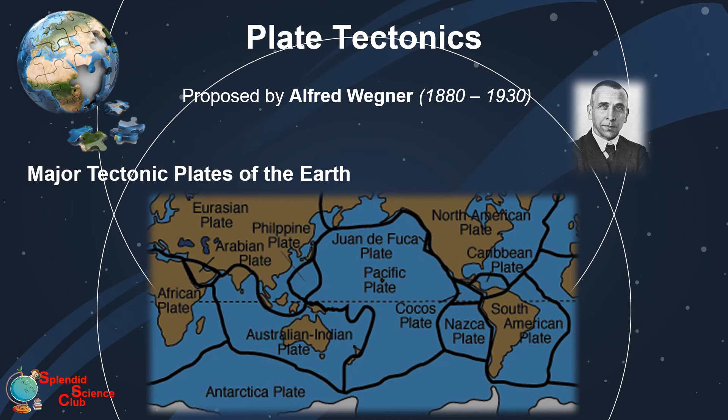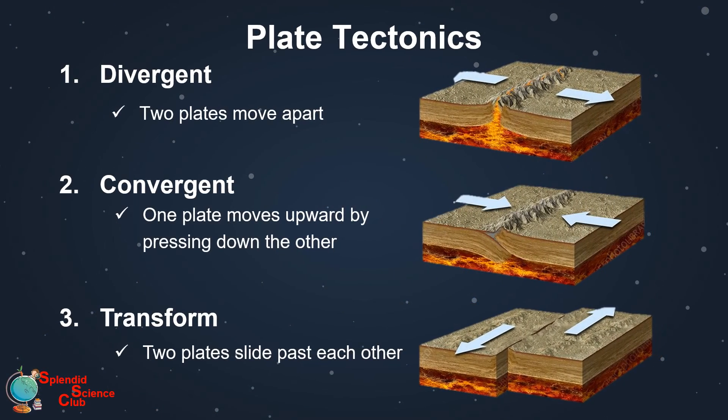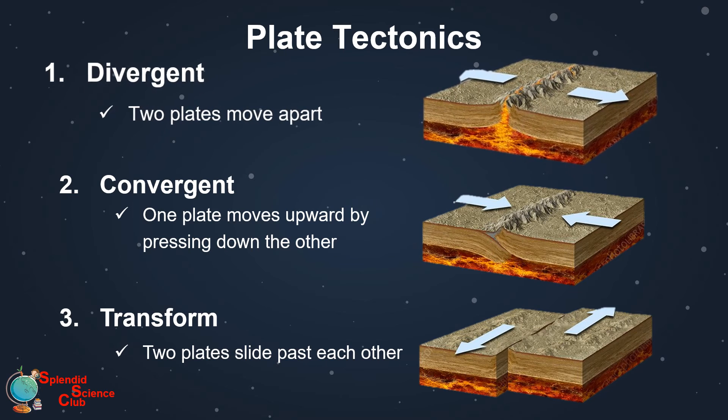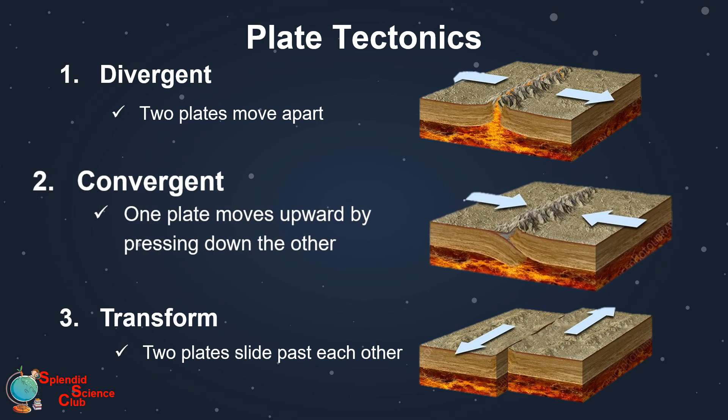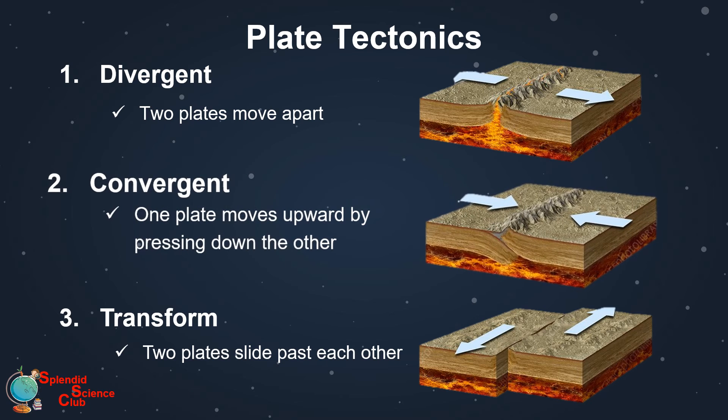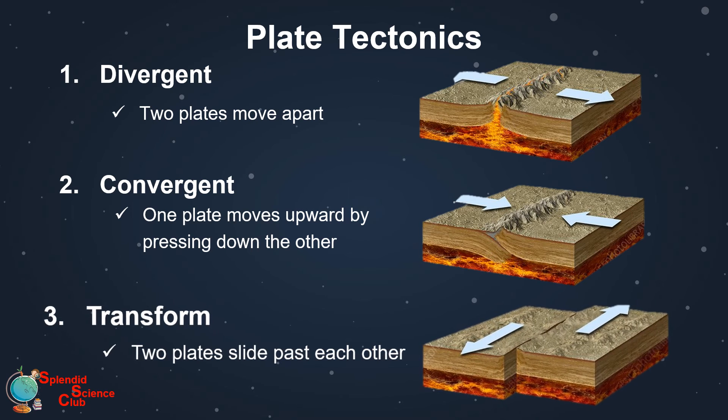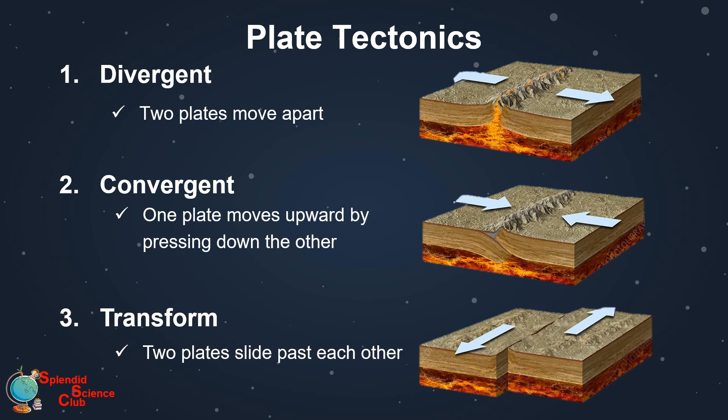These tectonic plates move relatively to each other. There are three main ways that tectonic plates move. In divergent movement, the two plates move apart from each other. Gulfs could be created by this movement. In convergent movement, one plate moves upward by pressing down the other. Mountains have been created this way. In transform movement, the two plates slide past each other. You may have heard a lot about earthquakes. Earthquakes take place due to this tectonic activities.